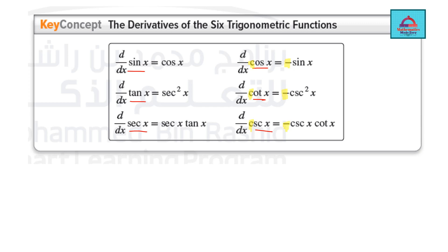If you observe carefully, when it is the trigonometric ratio starting from c—that is cos, cot, and cosecant—then the derivative has negative sign. It gives negative sin x, negative cosecant squared x, and negative cosecant x cot x as the result.